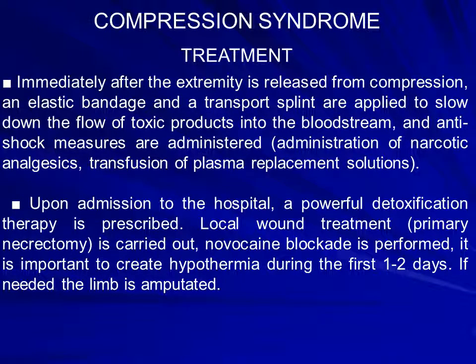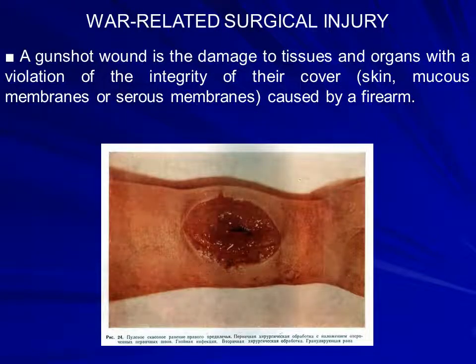Immediately after the extremity is released from compression, an elastic bandage and transport splint are applied to slow the flow of toxic products into the bloodstream. Anti-shock measures are administered: painkiller narcotics, analgesics, transfusion of plasma replacement solution to stabilize arterial pressure. Upon admission to hospital, powerful detoxification therapy is prescribed, local wound treatment and primary necrectomy (debridement) are carried out, novocaine blockade is performed, and hypothermia is created during the first 1–2 days. If needed, the limb may be amputated to save the patient's life.